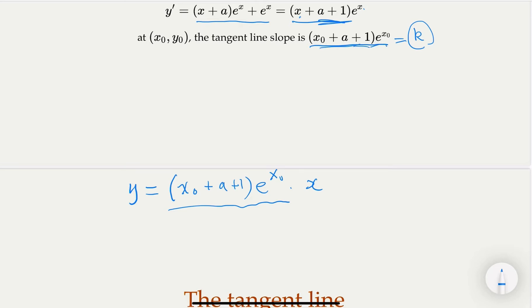In other words, the equation would be y = (x₀ + a + 1)e^(x₀) times x. This is the equation. Notice that this is the equation for tangent line, but tangent line is going to touch the curve at the derivative point. Which means the point (x₀, y₀) would satisfy this. So (x₀, y₀) is on the line.